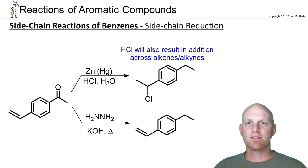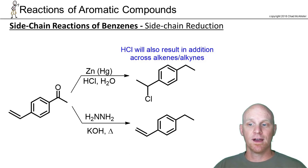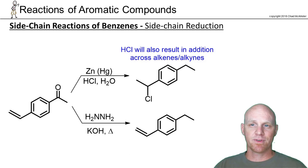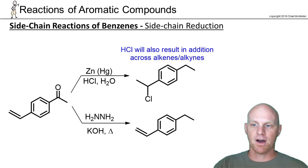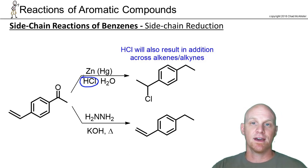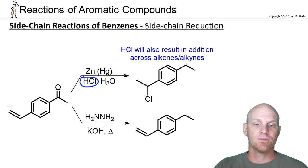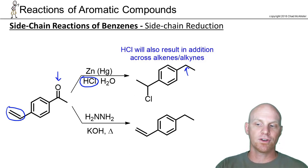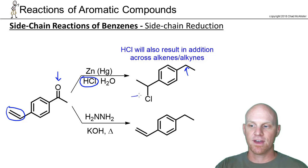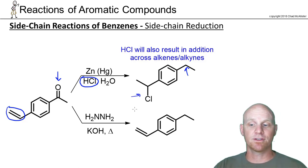The Clemmensen and Wolff-Kishner reductions are sometimes interchangeable, but there are places where you can see a difference — and some professors cover this while others don't. The big thing with the Clemmensen reduction is that it involves HCl, and HCl can add across an alkene. So if your molecule contains an alkene, we're not just going to reduce the ketone to an alkane — we're also going to do a Markovnikov addition of H and Cl across the alkene when using Clemmensen reagents.